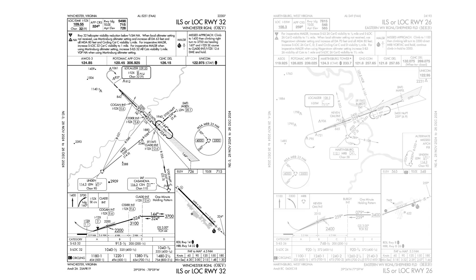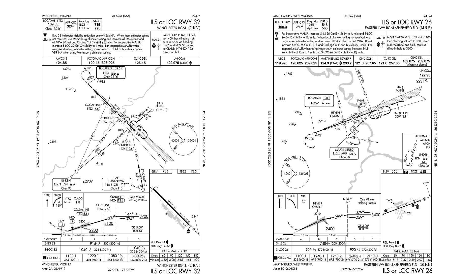The ILS at our destination, Martinsburg, doesn't have that ANA notation in it. At first glance, there doesn't seem to be any difference between these two perfectly good approaches. One hint, though, is that Winchester is a non-towered airport with a CTAF frequency, while Martinsburg has a control tower.